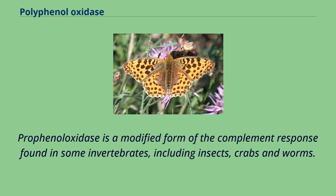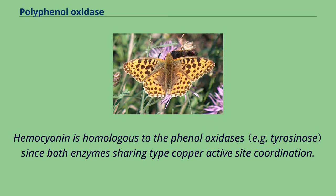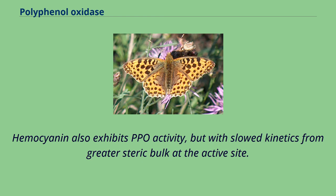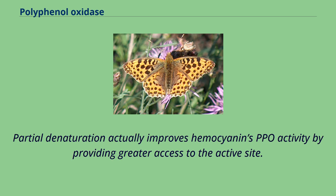Prophenol oxidase is a modified form of the complement response found in some invertebrates, including insects, crabs and worms. Hemocyanin is homologous to the phenol oxidases, since both enzymes share a type copper active site coordination. Hemocyanin also exhibits PPO activity, but with slowed kinetics from greater steric bulk at the active site. Partial denaturation actually improves hemocyanin's PPO activity by providing greater access to the active site.